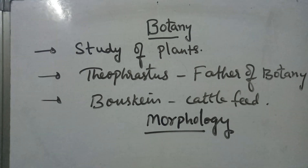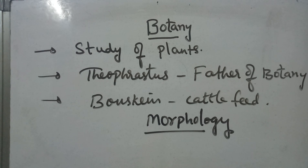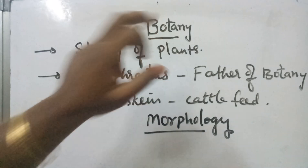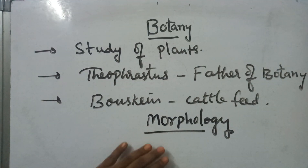Whatever functions different structures of plants perform, we are going to discuss in morphology. For example, a plant has two parts: root system and shoot system. What the roots do, what the stem does, how branches and leaves are formed on the stem, how a leaf performs important functions like photosynthesis — all these things will be discussed in botany.